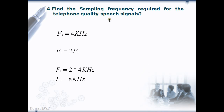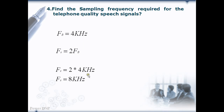We have here taken a telephone quality signal. The bandwidth of the speech signal is 4 kHz. Normally, the human voice contains frequencies ranging from 300 Hz to 3.4 kHz, so we take the bandwidth as 4 kHz — well above the maximum frequency of 3.4 kHz. The sampling frequency required is 2 * f_b = 2 * 4 = 8 kHz. Therefore, the sampling frequency of the telephone quality speech signal is 8 kHz.